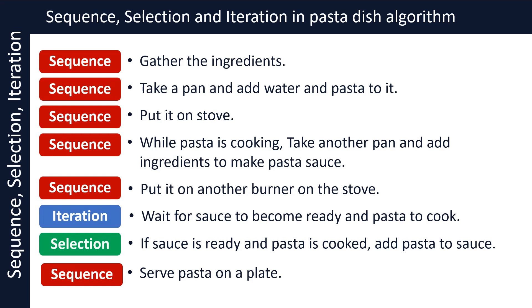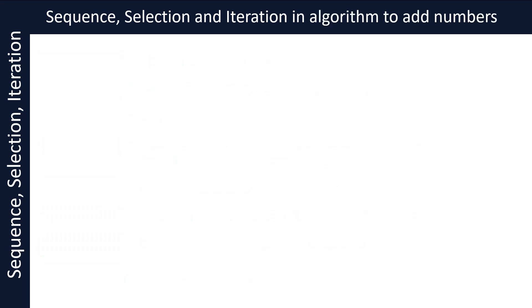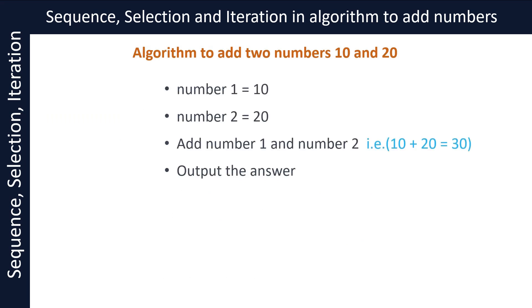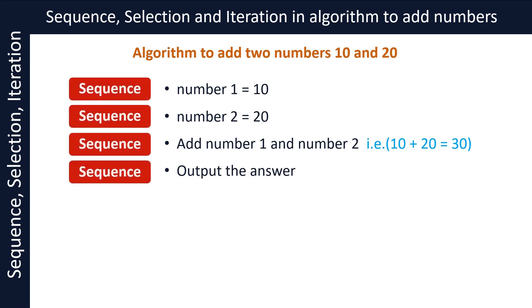Let's now look at the algorithm to add two numbers. Here we have two numbers, 10 and 20. We add these two to produce the answer. Here are the steps. This is a very simple algorithm where we only use sequence. All the steps, if performed in the given order, will allow us to add two numbers 10 and 20 to produce the answer 30.